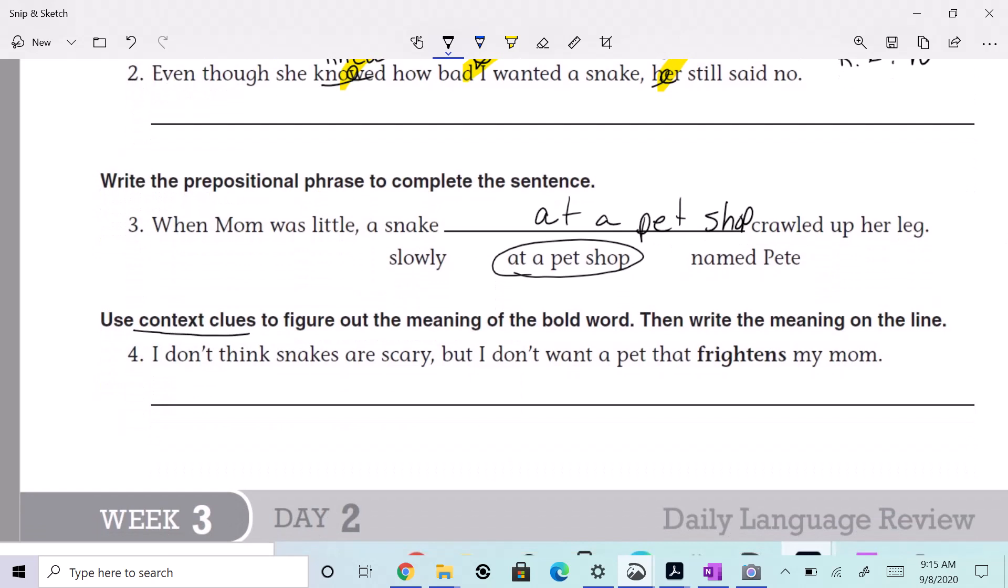clues to figure out the meaning of the bold word. Then write the meaning on the line. So the bold word is 'frightens.' Let's highlight some words that let us know what the word frightens means. I don't think snakes are scary, but I don't want a pet that frightens my mom. What word kind of helps us? What does the word frightens mean? Are there words in there? Yeah, scares. Frightens means scary, right?